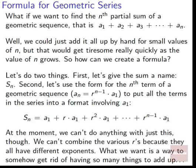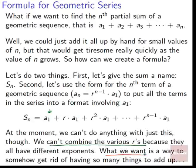So we've got S_n = a_1 + r*a_1 + r²*a_1 + ... + r^(n-1)*a_1. At the moment we can't combine the various r terms because they all have different exponents — r^0, r^1, r^2, up to r^(n-1). We can't pull them all out at once. What we're really looking for is a way to get rid of having so many things to add up.